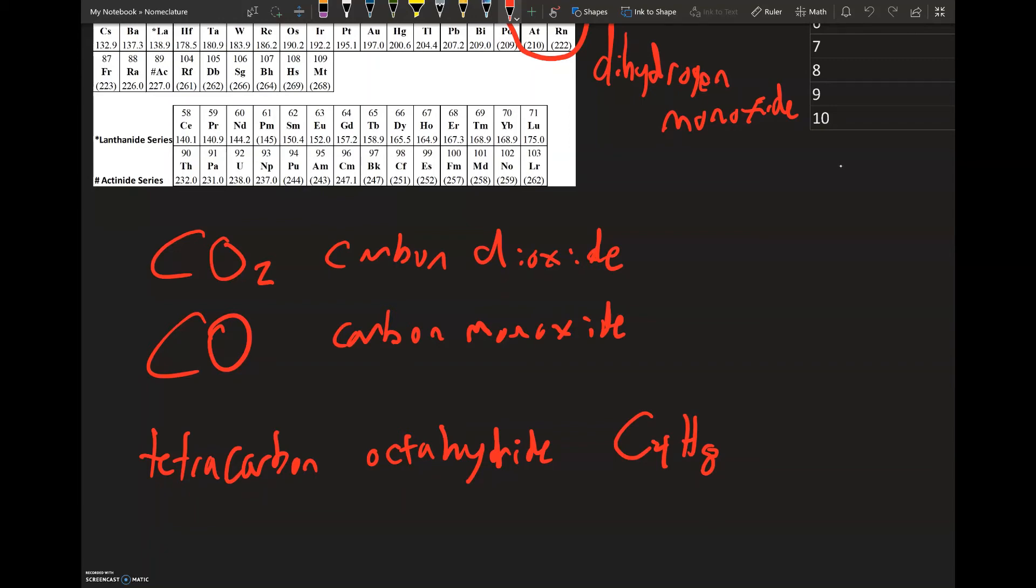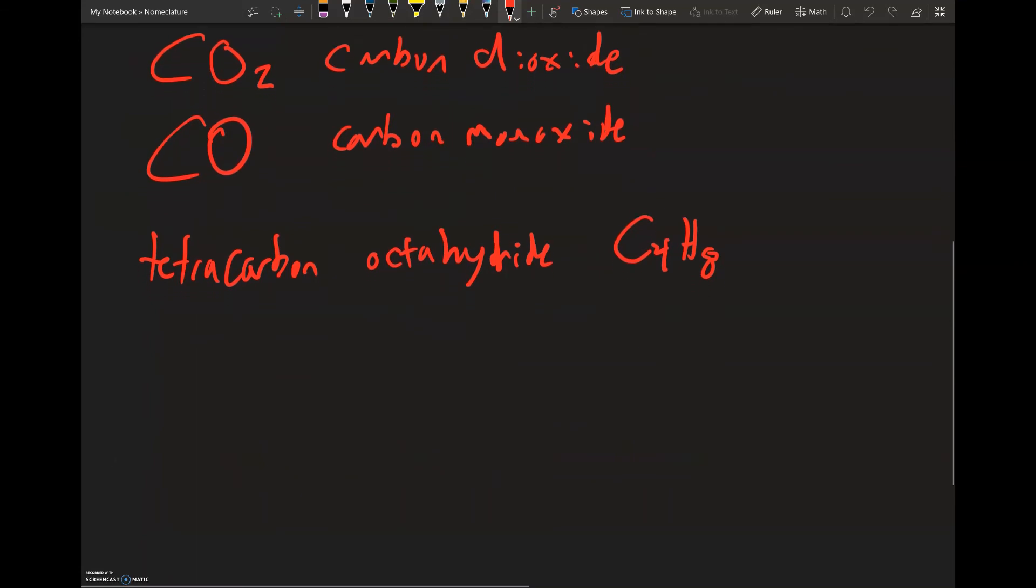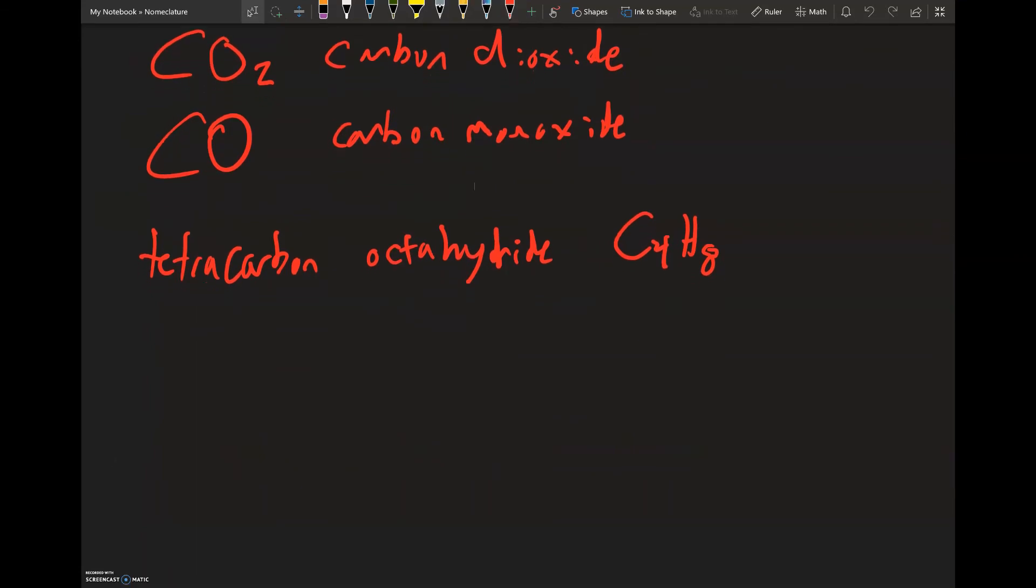So this is C4H8. This is a good example of where we have the name and we write the formula from it. You can do this many different ways. We'll just do a couple that are sort of fast.